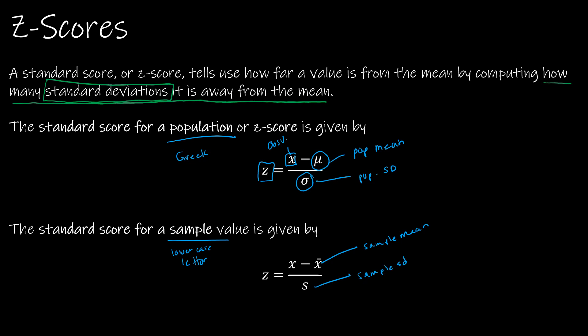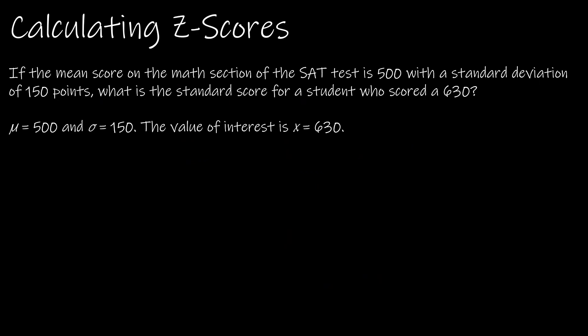It's really the same thing, so you're going to hear me say 'observed minus expected over the standard deviation' a lot — you'll probably get really sick of it, sorry! But that's because it works all the time. What's the observed value, what's the expected value? We expect the mean, whether it is a sample mean or a population mean, and then we divide by the standard deviation, which could be the population or the sample.